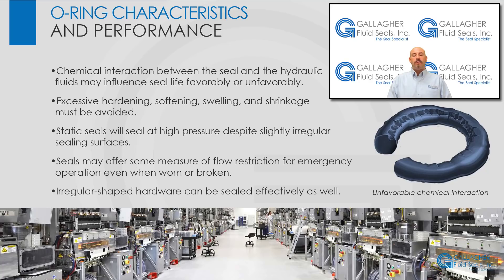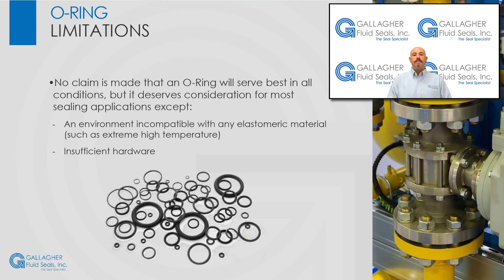O-rings are extremely dependable because of their simplicity and ruggedness. Static seals will seal at high pressure despite slightly irregular sealing surfaces. Even when broken or worn excessively, seals may offer some measure of flow restriction for emergency operation. Irregularly shaped hardware can be sealed both in static and dynamic applications. While no claim is made that an O-ring will serve best in all conditions, the O-ring merits consideration for most seal applications except environments completely incompatible with any elastomeric material, such as extremely high temperatures or insufficient hardware to support an O-ring groove.